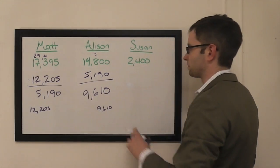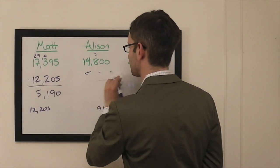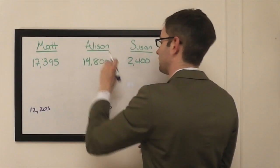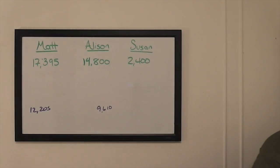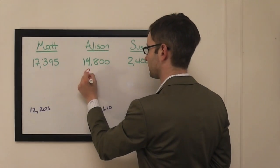Susan's out of this. She doesn't have more than the difference between Allison and Matt. So now we get into mind games. And if Allison wagers that $9,610 amount, I'm going to switch color just for the sake of visuals. $9,610.